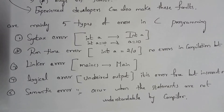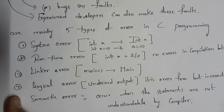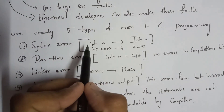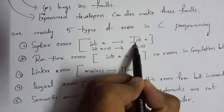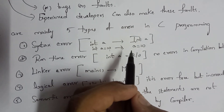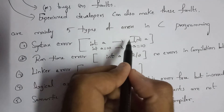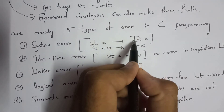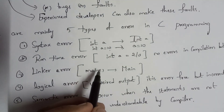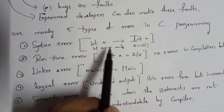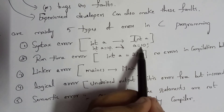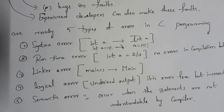The first type is a syntax error — any error made in the syntax. For example, in 'int', the 'i' should be lowercase, but if you write it as a capital 'I', that is a syntax error because a data type should not start with a capital letter. Also, variables must be declared with a data type. If you write 'a = 10' without writing the data type 'int', that is also a syntax error.